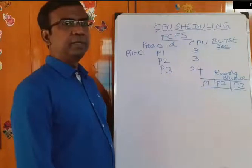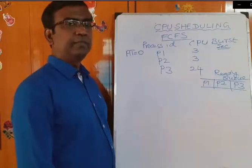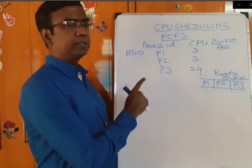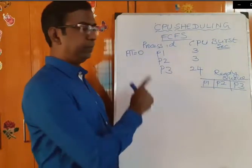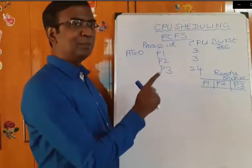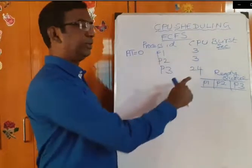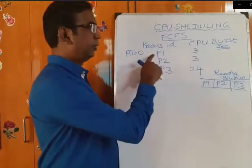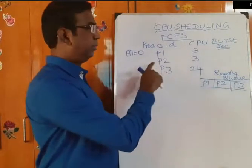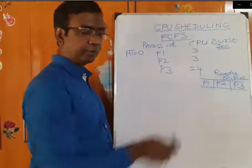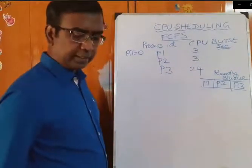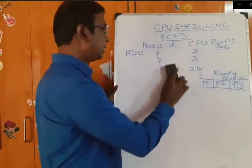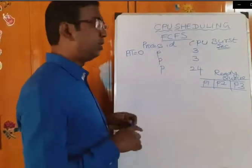Let us consider another example with the same First Come First Serve. Same number of processes: P1, P2, P3. Same CPU burst times also — 3, 3, 24 — but in reverse order. First P1 3 seconds, P2 3 seconds, P3 24 seconds. For easy understanding, we can take the same processes coming in a different order.